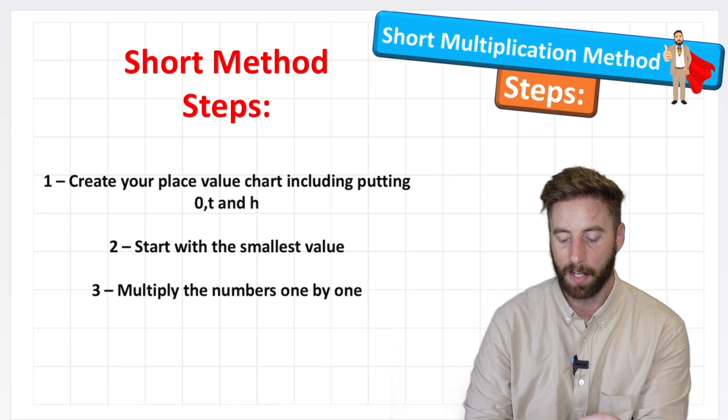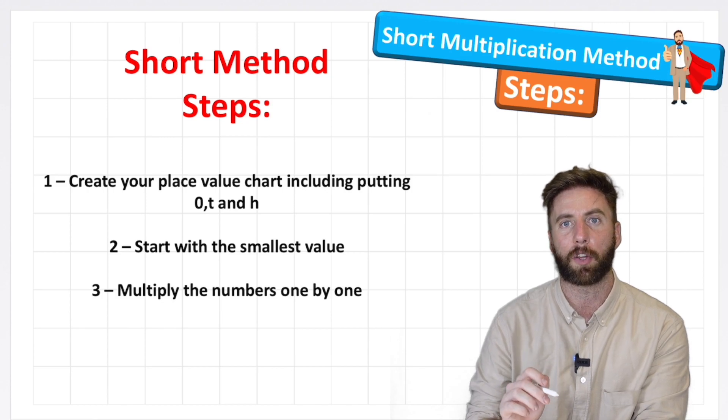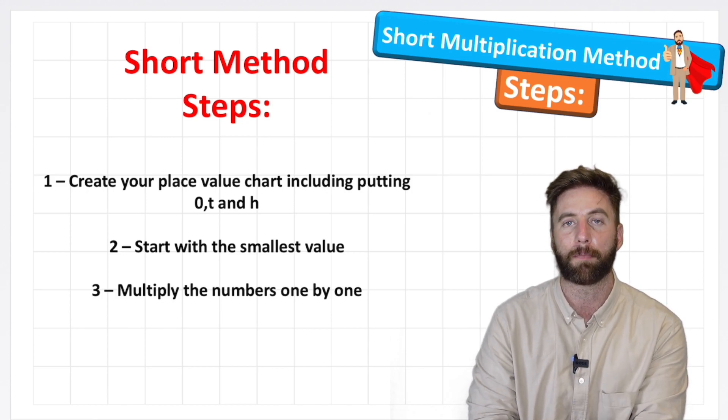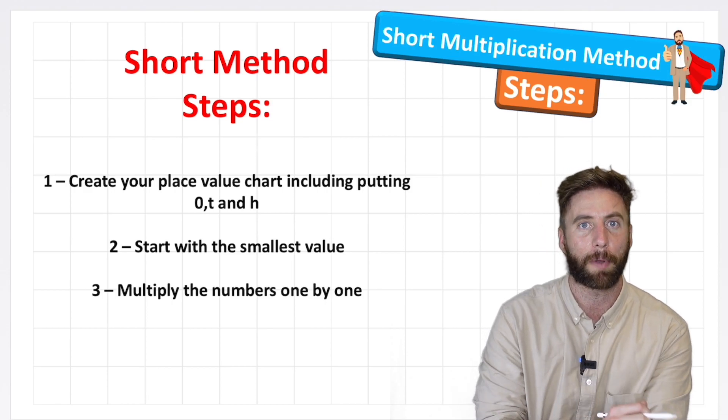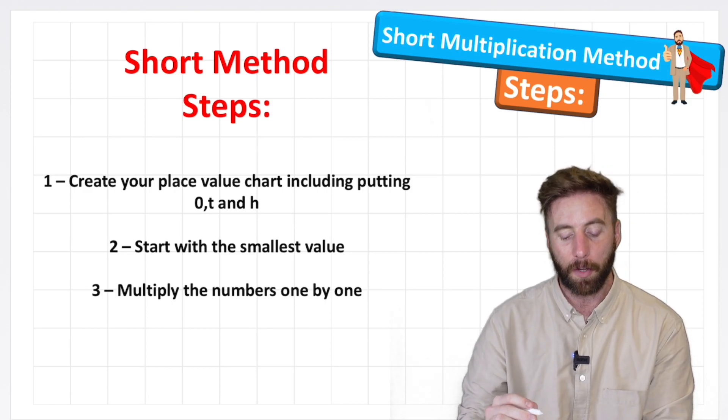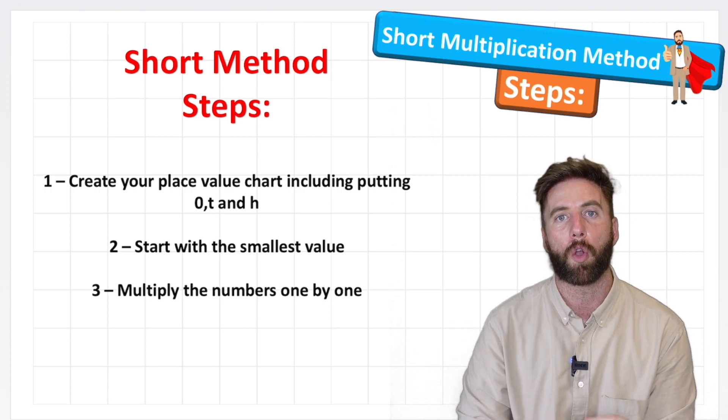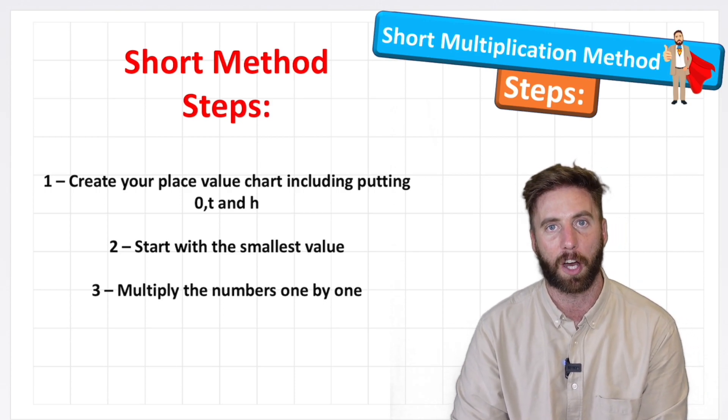First step is going to create our place value columns and make sure we put our labels on the top. That's going to become very important. Make sure we don't put the things in the wrong place. Then we're going to start with our smallest value. I'll explain more about that in a minute. And then we're going to multiply our numbers one by one, working our way up the place value chart.